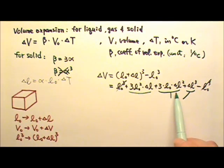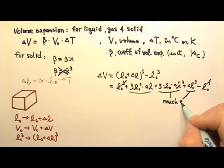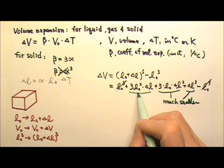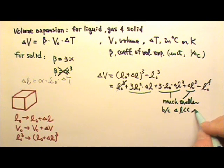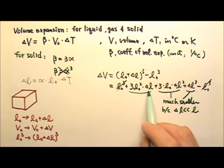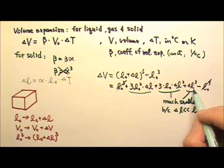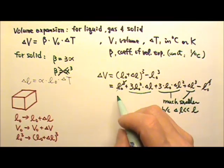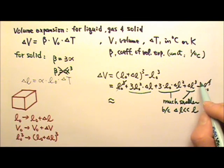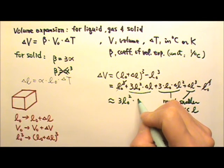So delta V equals those three remaining terms added together. However, the terms with delta L squared and delta L cubed are much smaller than the first term, because delta L is much smaller than L. Multiplying by delta L gives a small number, delta L squared gives an even smaller number, and delta L cubed is smaller still. So we can ignore those terms and say delta V is approximately 3L0² times delta L.